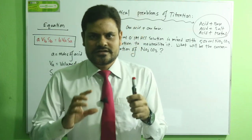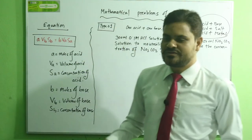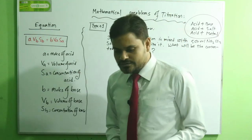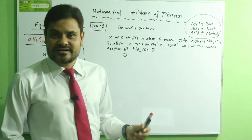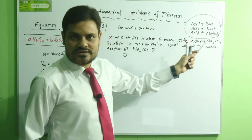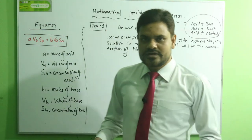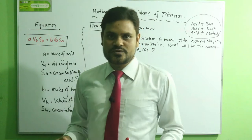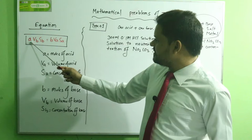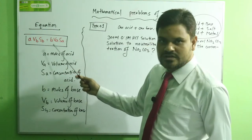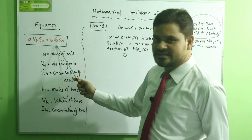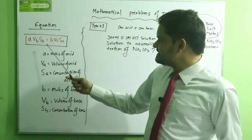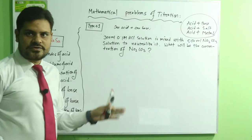In the last video regarding titration, we learned the volumetric equation. This is acid-base titration, and there are other forms as well — acid with salt and acid with metal — which are also neutralization reactions. We can easily find the concentration of an unknown substance using a known solution by this titration process. In the volumetric equation: 'a' is for moles of acid, 'b' is for moles of base, Va is volume of acid, Sa is concentration of acid, Vb is volume of base, and Sb is concentration of base.